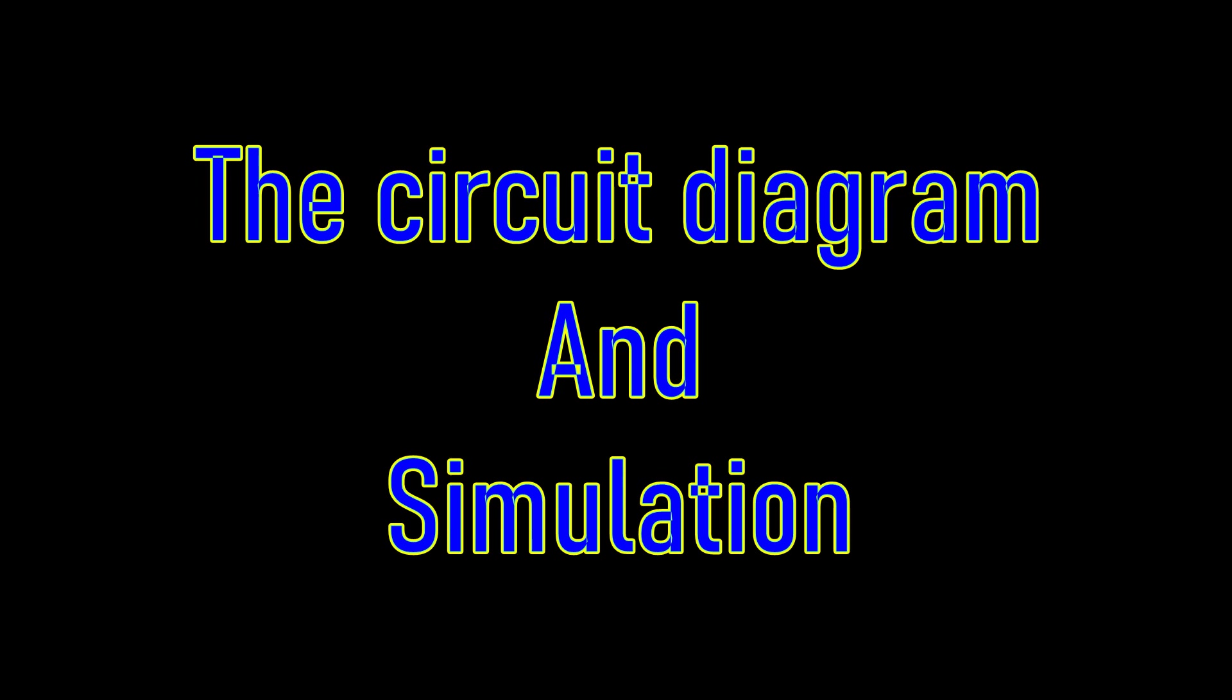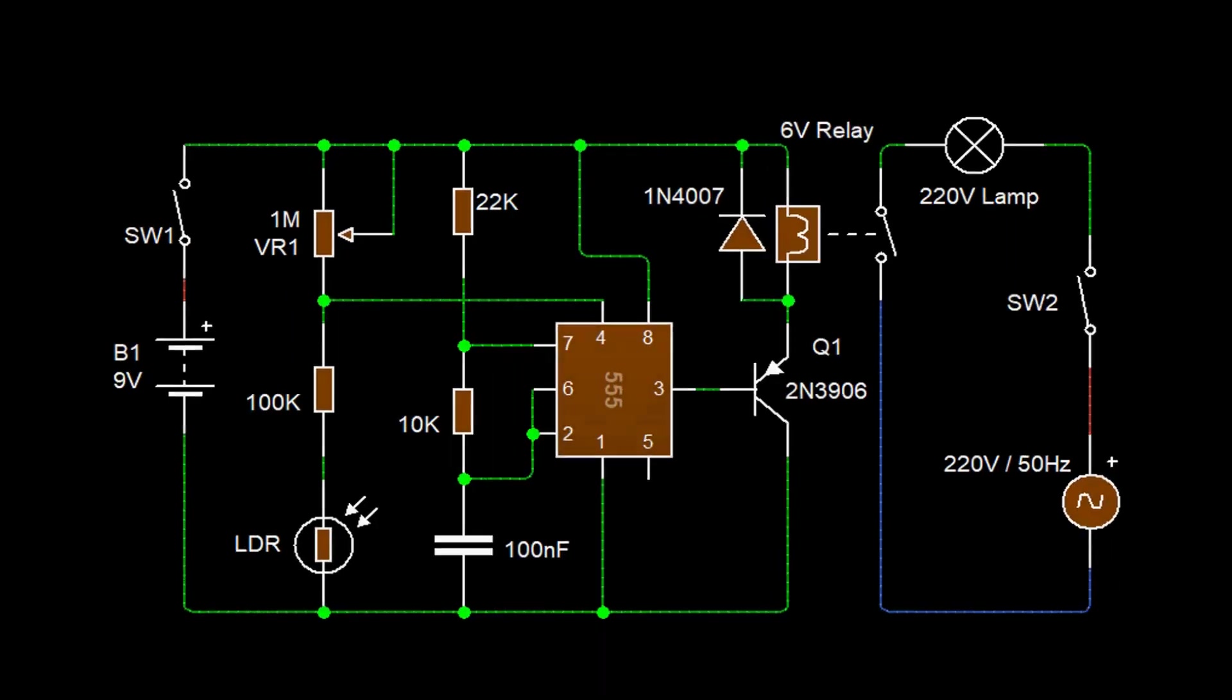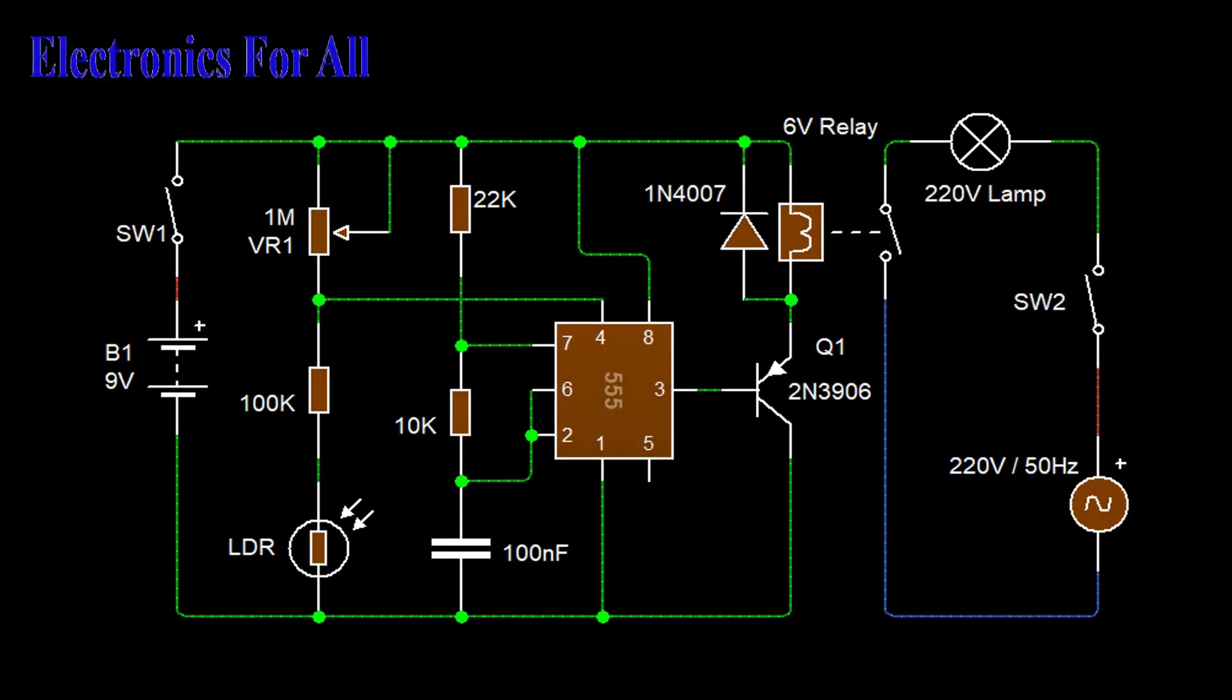The circuit should seem very similar to the astable multivibrator, that is because the circuit is an astable multivibrator with only one modification. This modification is done at reset pin, pin 4.